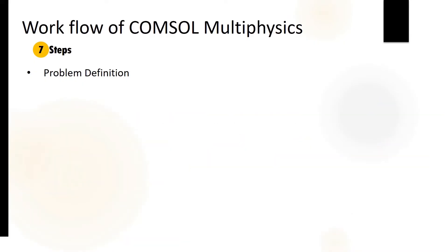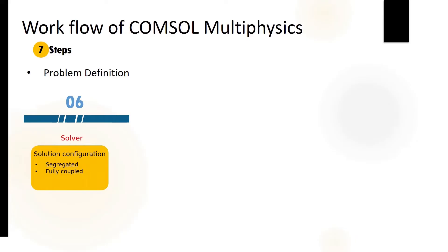After the study step, step number six is the solver configuration. In COMSOL you have different configurations — the most common are segregated or fully coupled. COMSOL automatically selects the solver configuration appropriate to your problem. After the solver configuration, you simply click the Compute button and it will solve the problem.